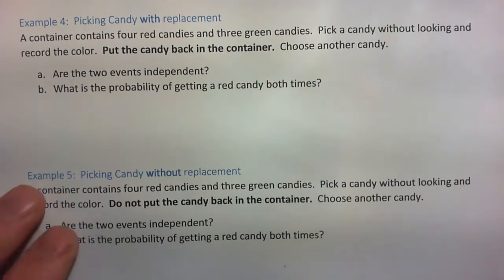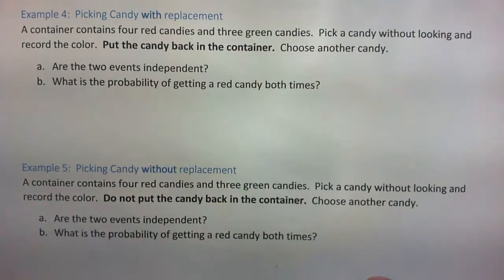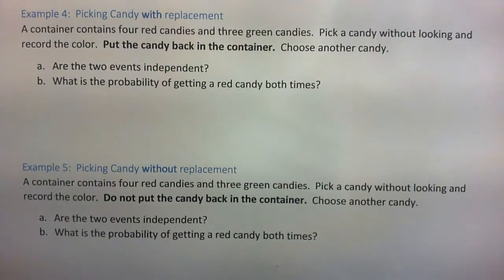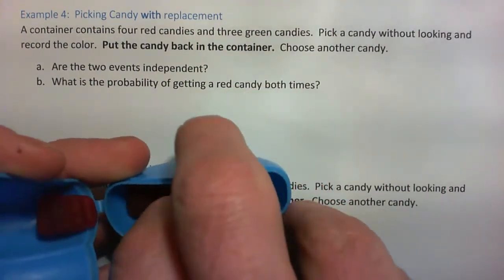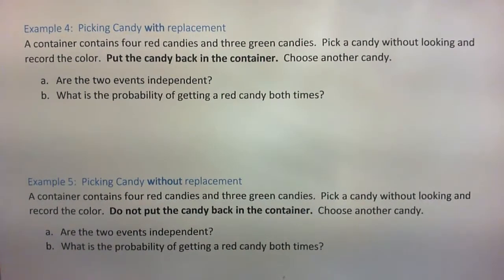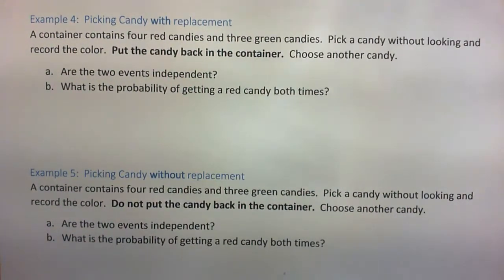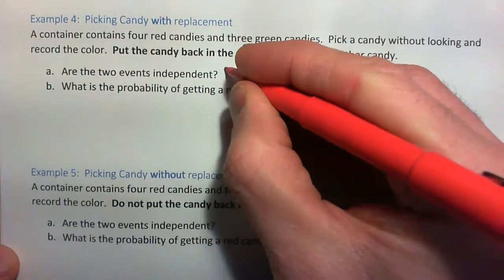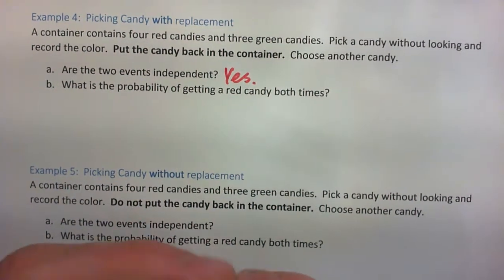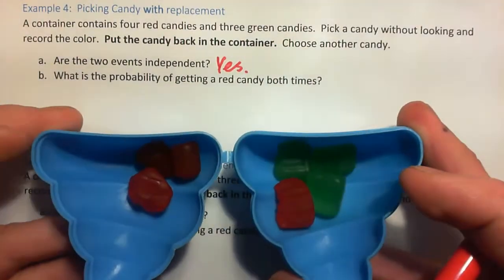What's the probability of getting a red candy both times? First of all, let's tackle this: are the two events independent? The two events are picking a candy, replacing it, and then picking again. Are they independent? Yes, they are — because whatever you get in the first pick does not alter your probability of the next pick.